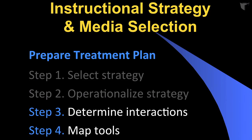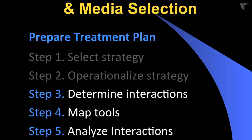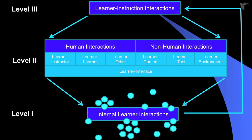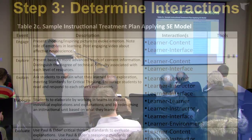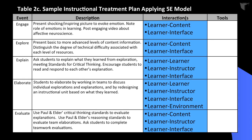Then I determine the interactions that are necessary. I've selected my strategy; now I'm trying to figure out what type of learner-human and learner-non-human interactions I'm going to use to facilitate each of those events. I'm basing the interactions on pedagogy, my instructional strategy, and my theory — not just because someone told me that interactions are important. It's based on my grounded design.